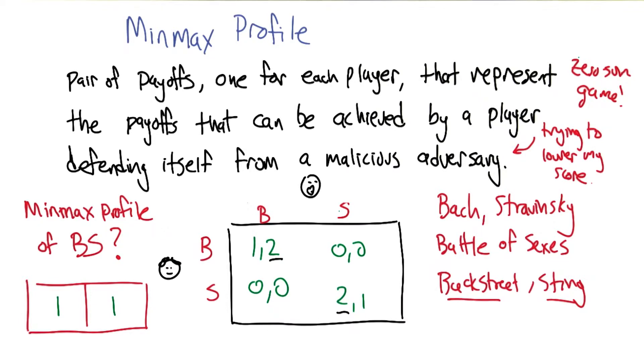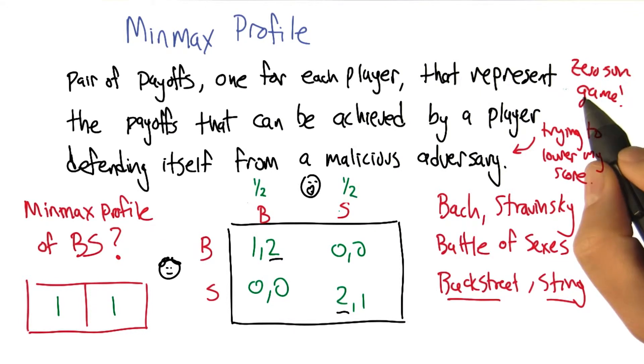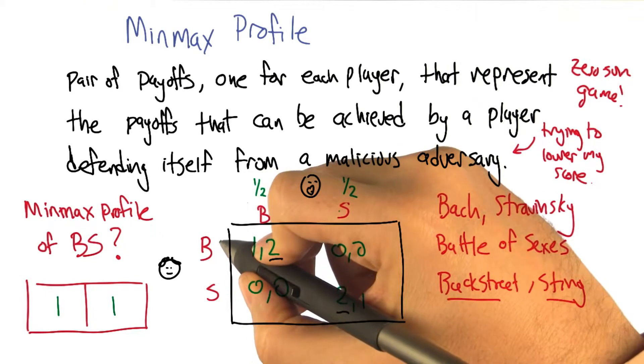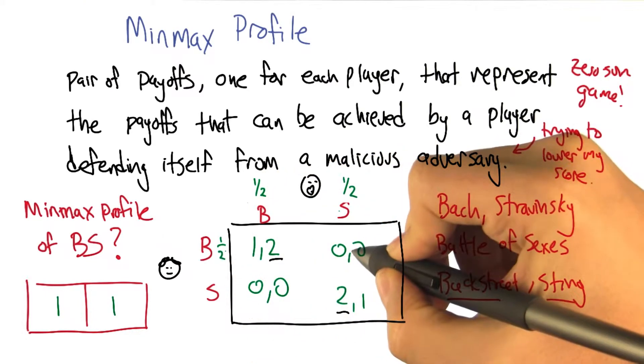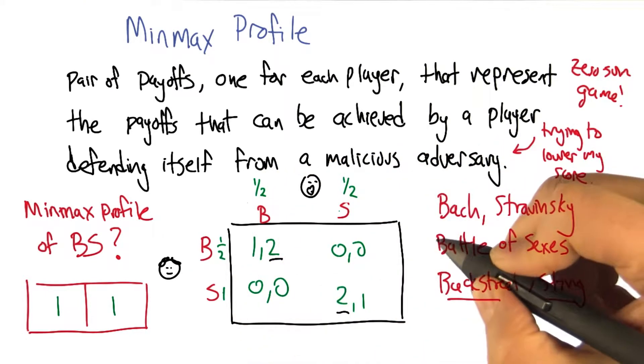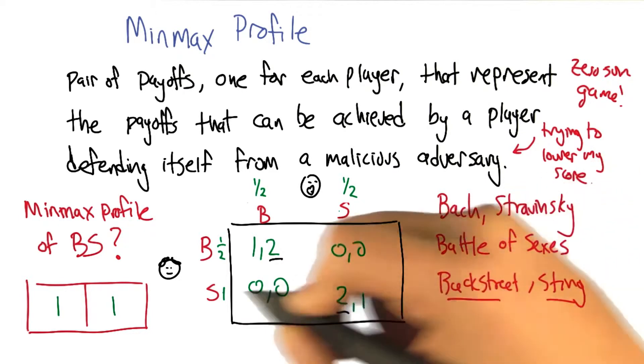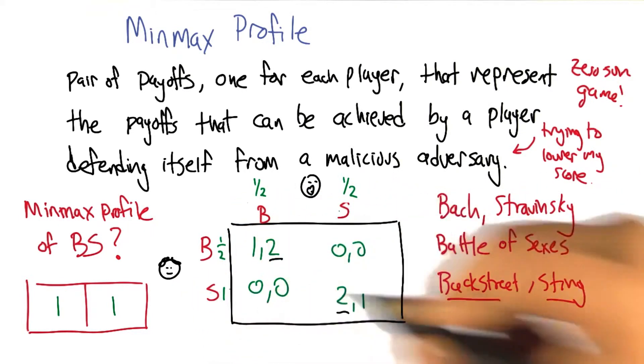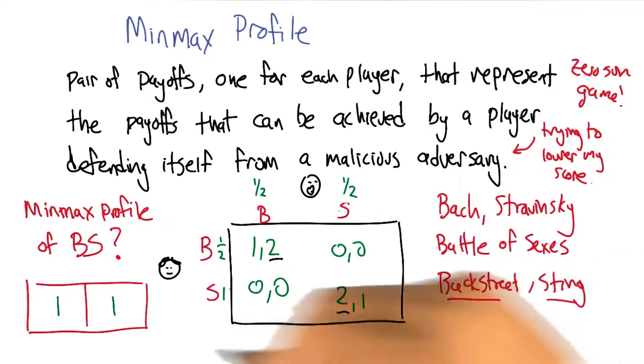I see. Then I would end up with 1 half and 1. For choosing B, the expected score would be a half, and for choosing S, the expected score would be 1. Yep. Oh, I see. And then Curly would choose S and get the 1. Right. And that's still consistent with that.